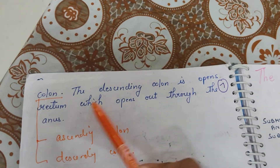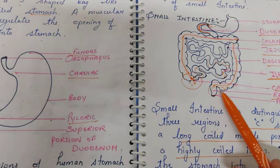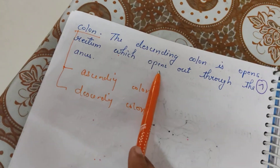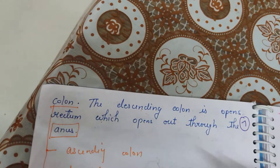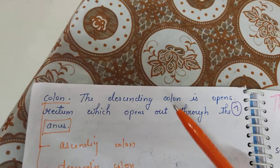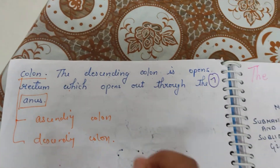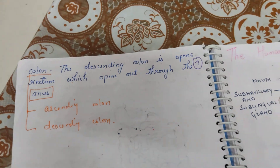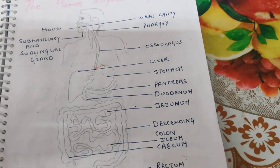After the descending colon comes the rectum. The rectum is followed by the anus, which is the last part of the alimentary canal. This is where the digestive system ends. After the anus, the excretory system begins, and all waste material is thrown out.